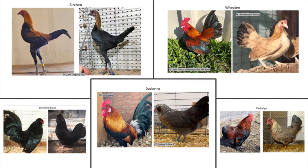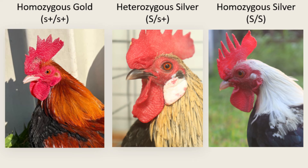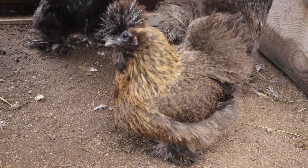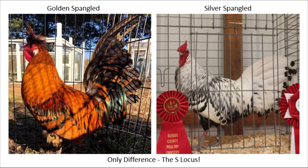The e-locus alleles control the distribution of where the black and red will appear on the body, and the S-locus alleles determine whether that red will stay red, like with gold, or will be inhibited with silver and turn it white — the absence of color. There are many color varieties out there that are identical in every way, with the exception of whether they are based on the silver or gold allele, and having a good understanding of these alleles will allow you to cross the types to get the desired color or type in the offspring you want when needed.